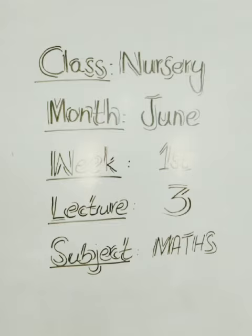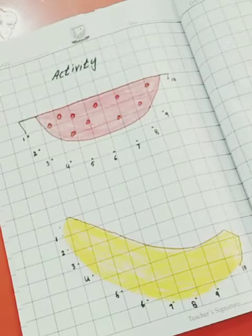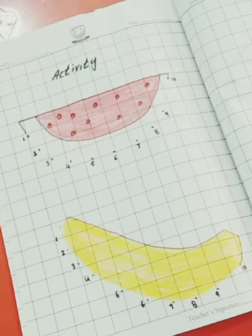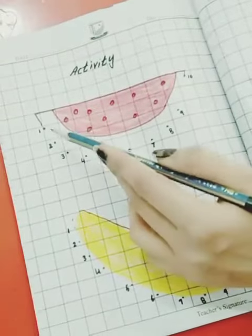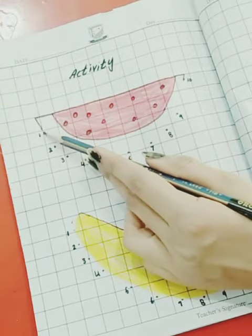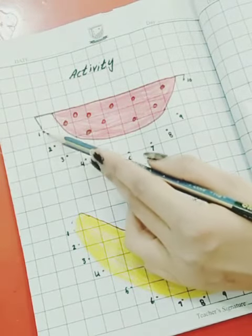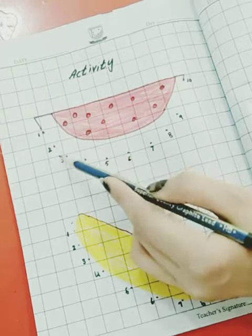Today we are going to do different activities of numbers one to ten. Our next activity is that we have to revise the numbers one to ten. You have to join the dots, count them, and connect the dots until you reach ten.